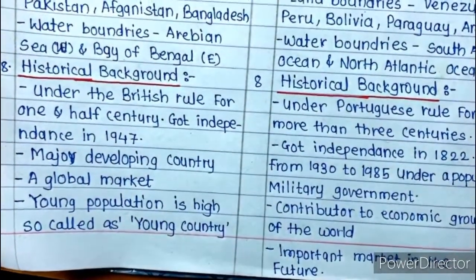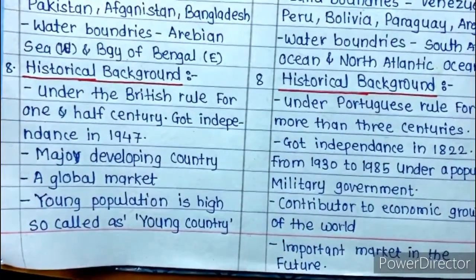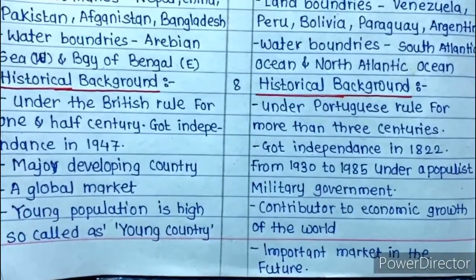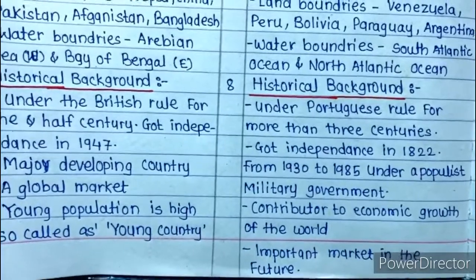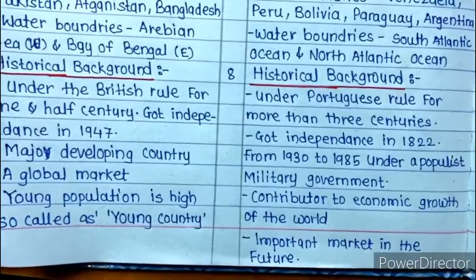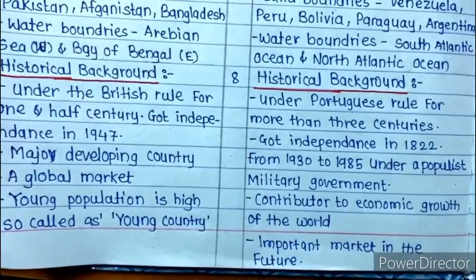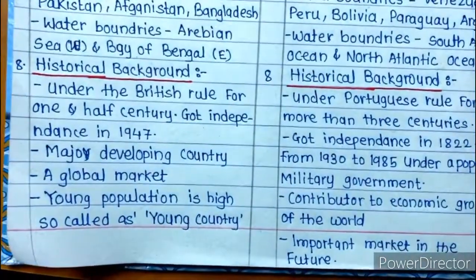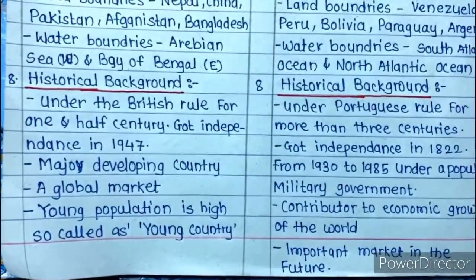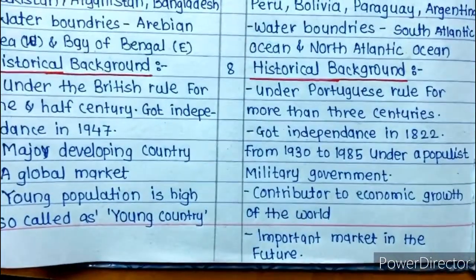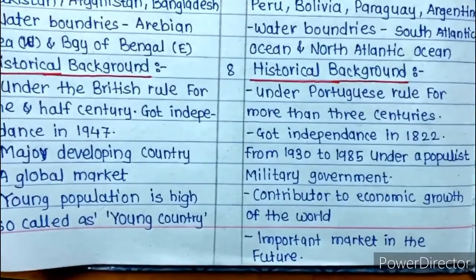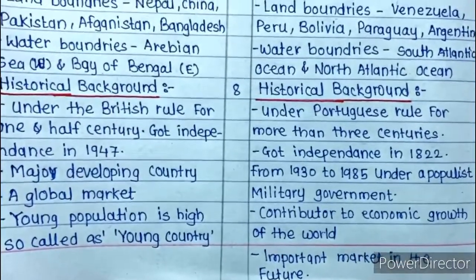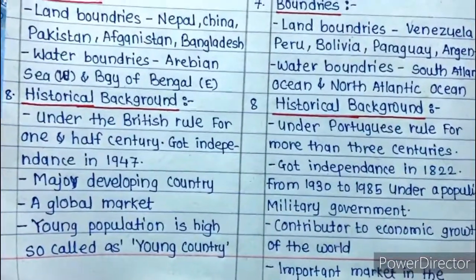The next point is historical background. India was under British rule for one and a half centuries and gained independence in 1947. Brazil had a populist militant government from 1930 to 1985. India is a major developing country, known as a global market with a high young population, which is why it is called a young country. Brazil is a major contributor to the economic growth of the world and is considered an important market for the future. That sums up all the important points from chapter two: Location and Extent.